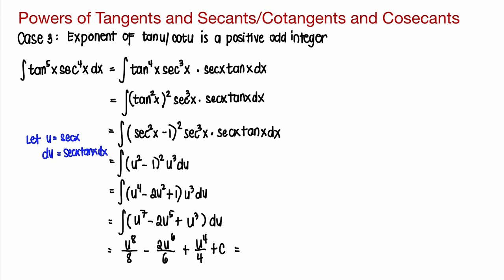Writing the result back in terms of the original variable, we get secant to the power of 8 of x over 8, minus 2 times secant to the power of 6 of x over 6 — which simplifies to secant to the power of 6 of x over 3 — plus secant to the power of 4 of x over 4, plus C.